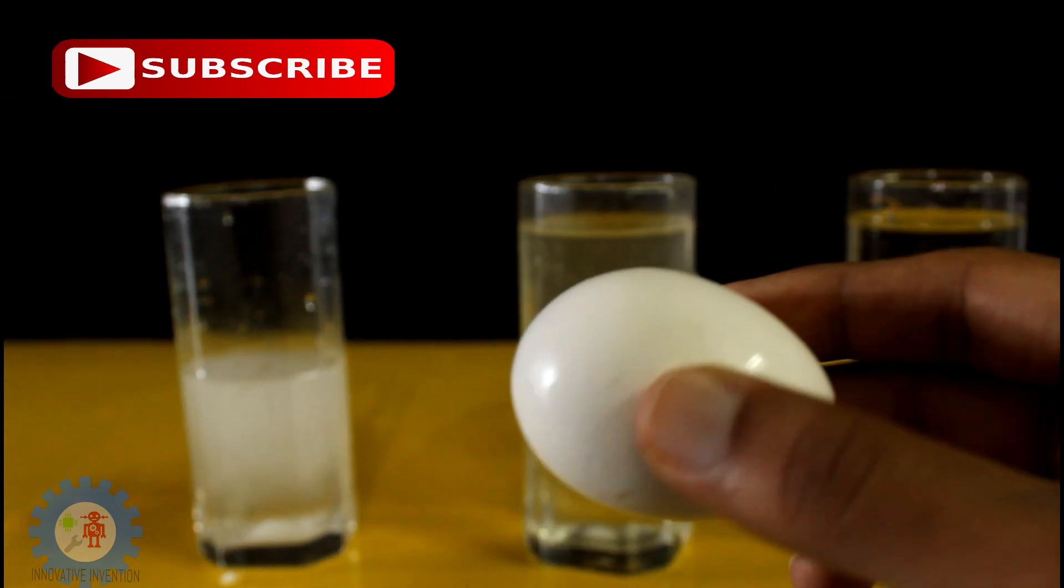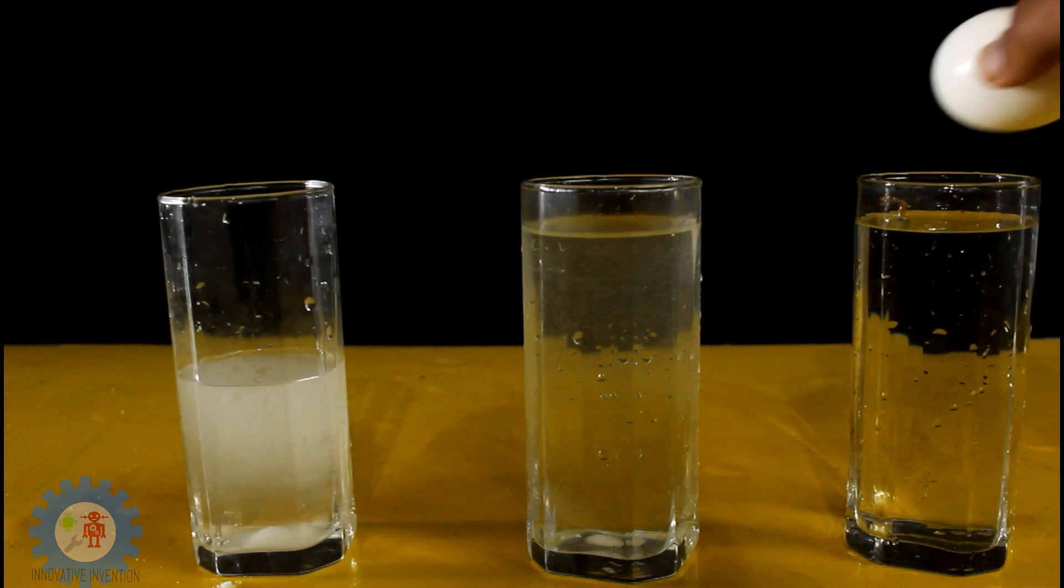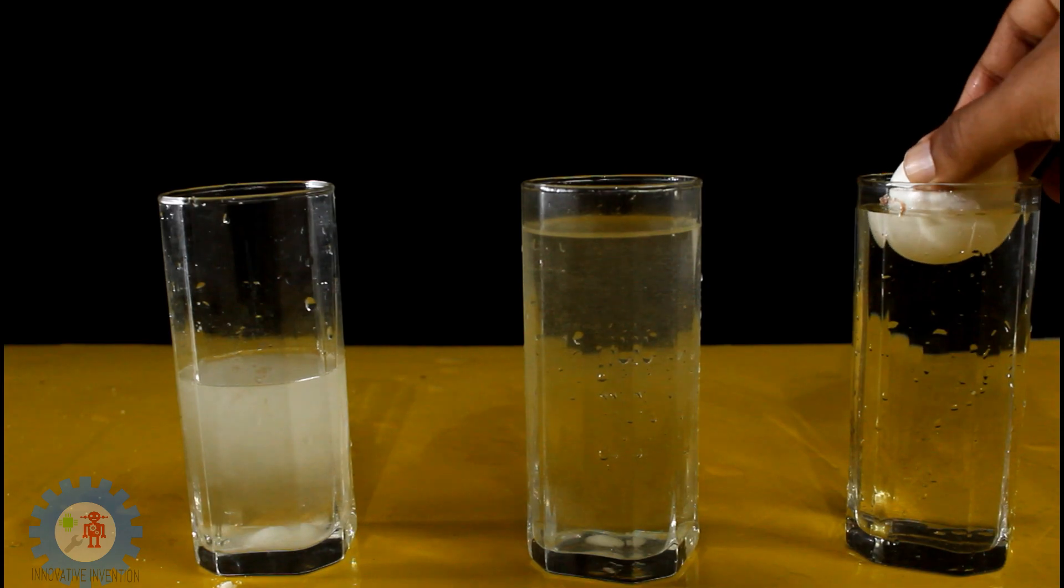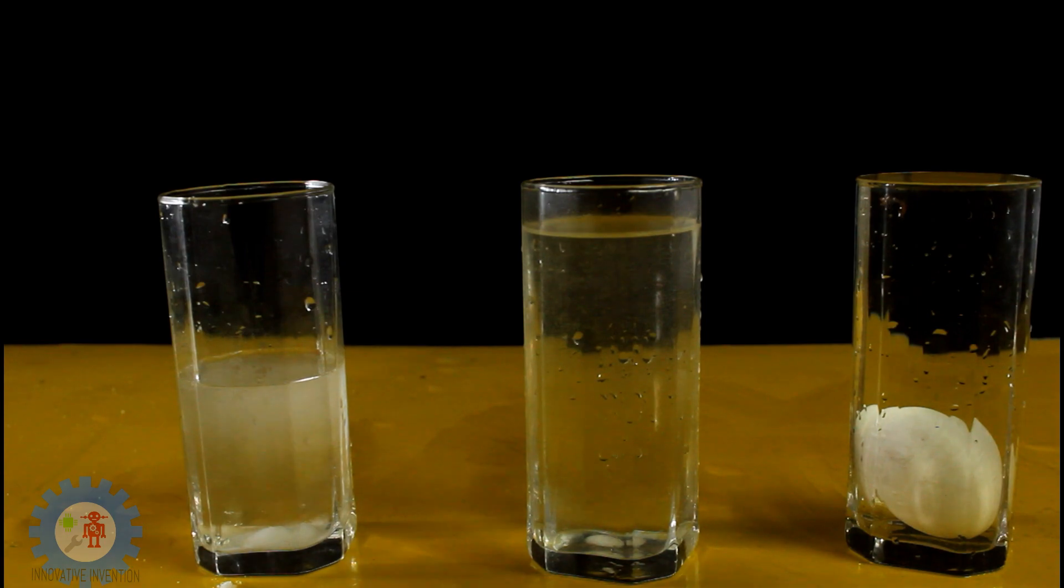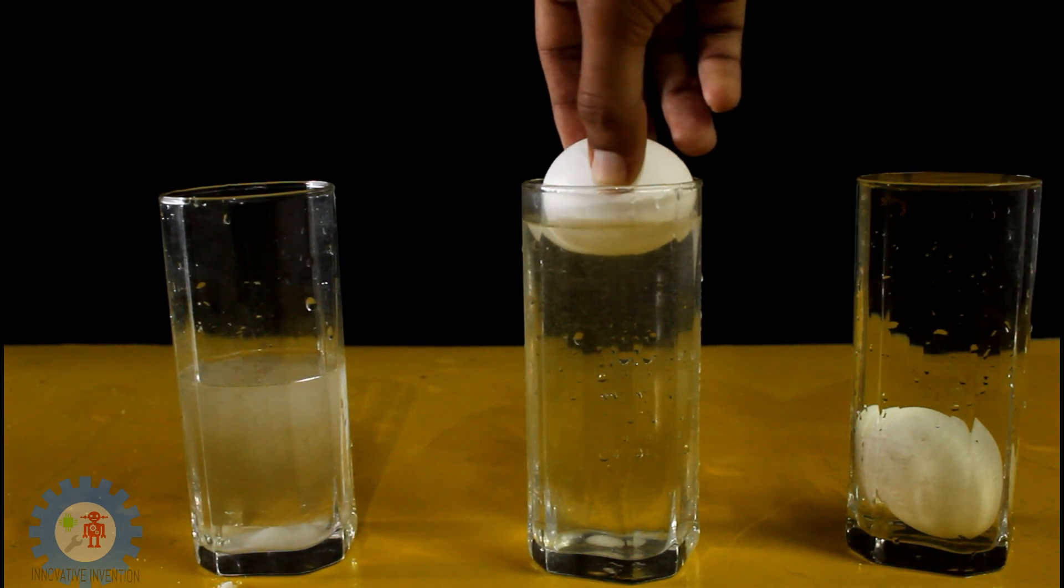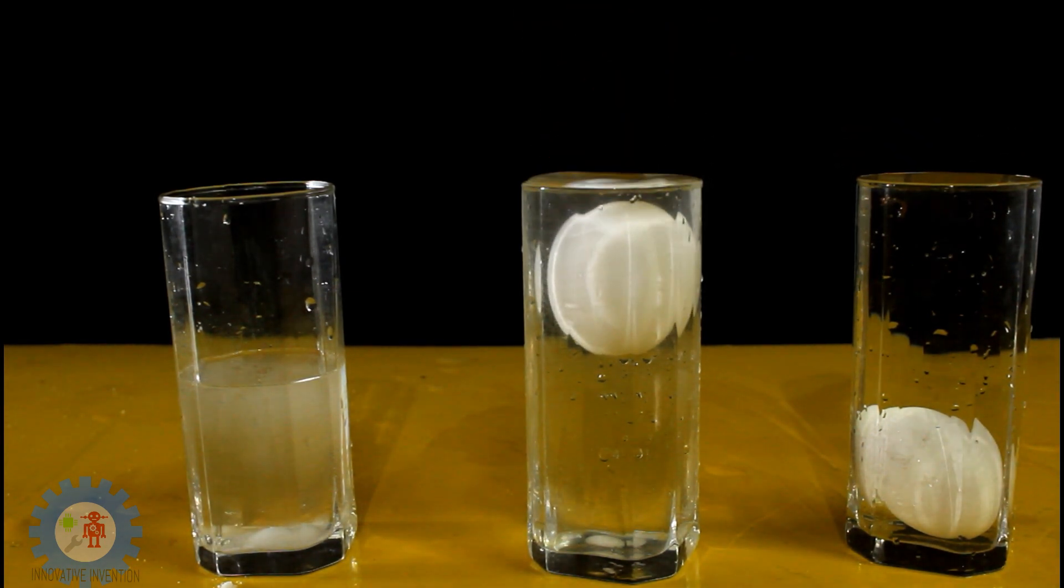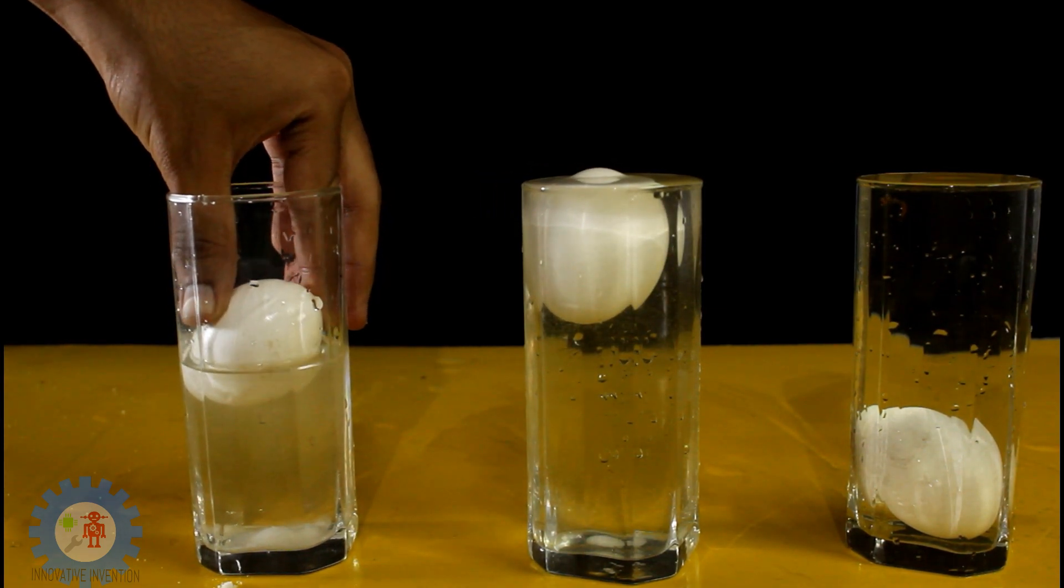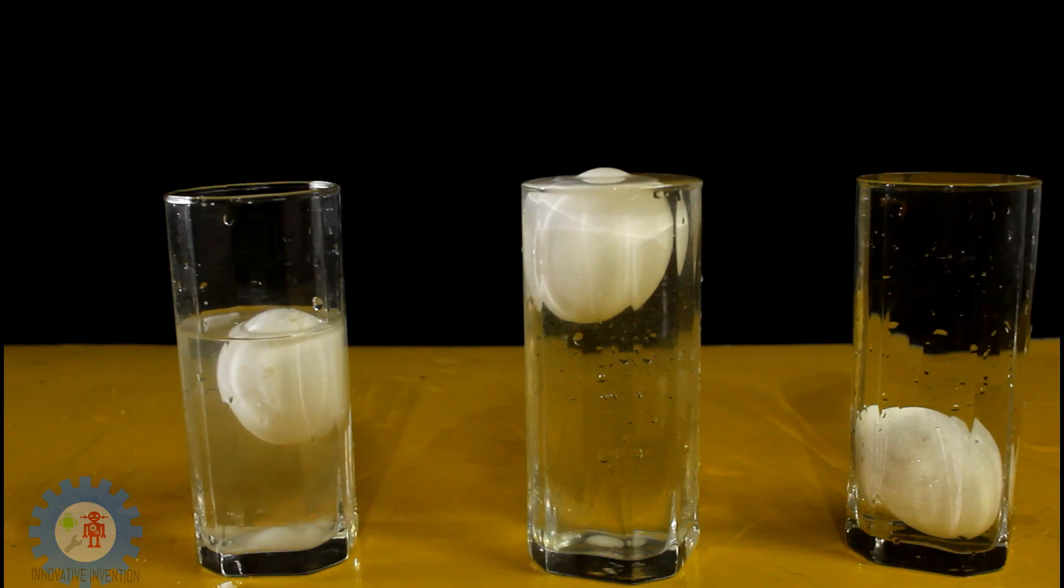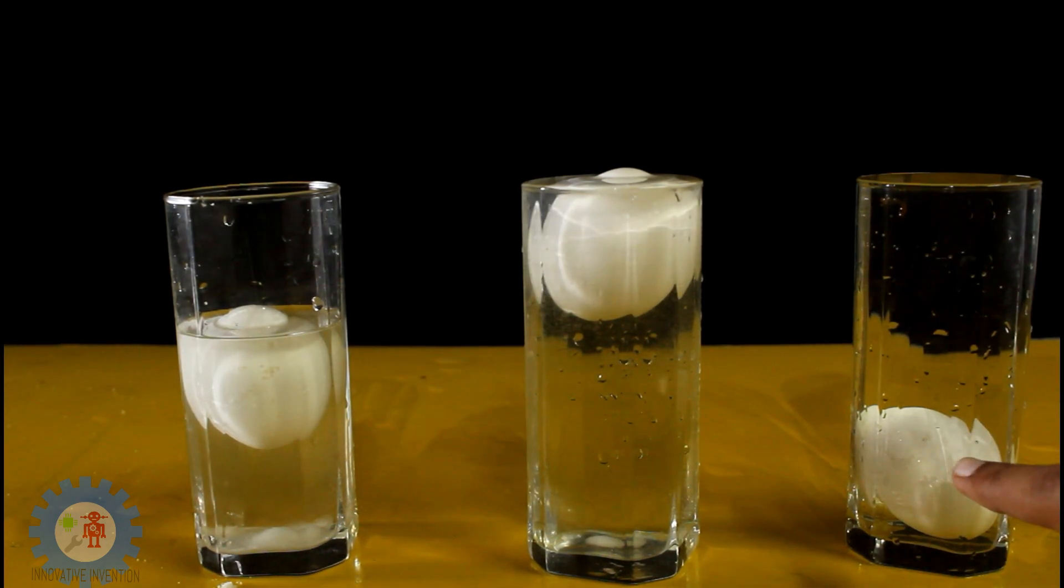Once it is done we'll be taking an egg and placing it in the first beaker with just pure water in it, and you can see the egg just drops down. In the second beaker the egg floats on the tip, and in the third one it floats up to the tip of the water level.